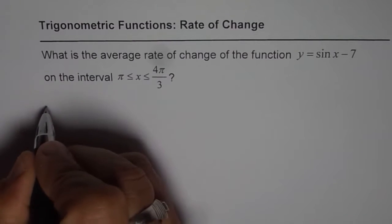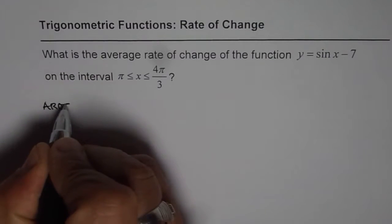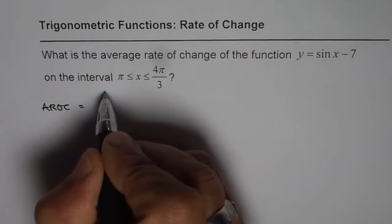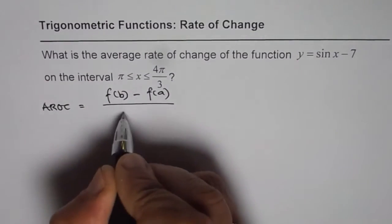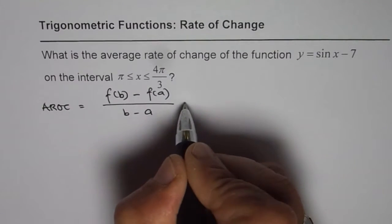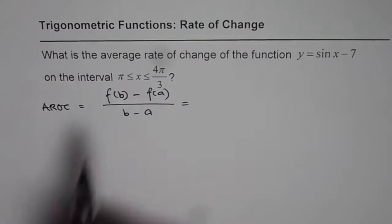As we know, average rate of change is basically f of b minus f of a divided by b minus a. So in this particular case, it is going to be sine of...